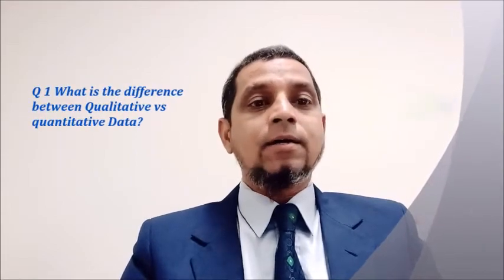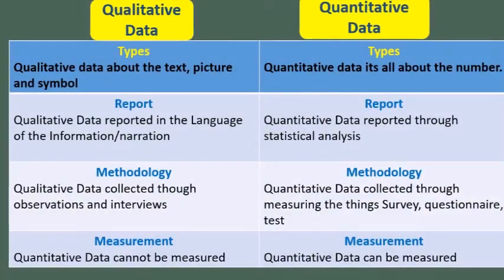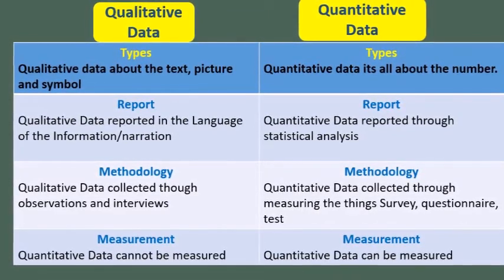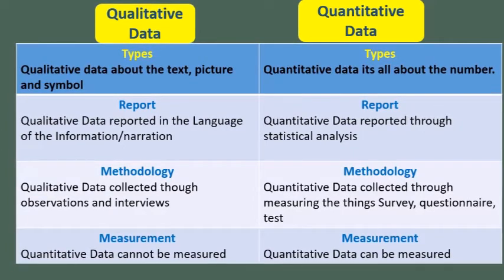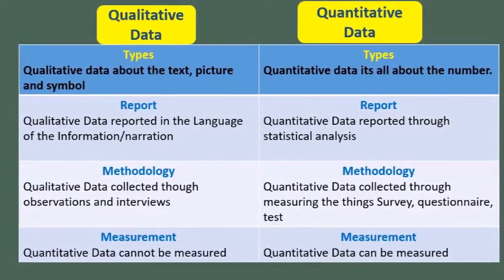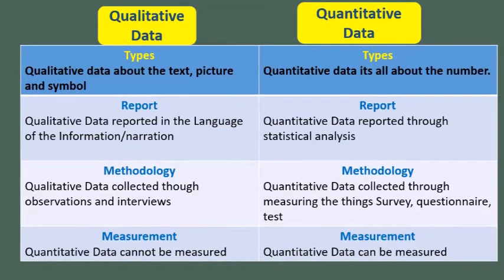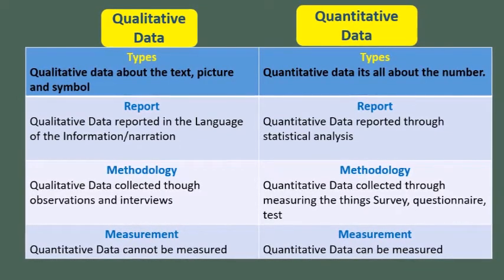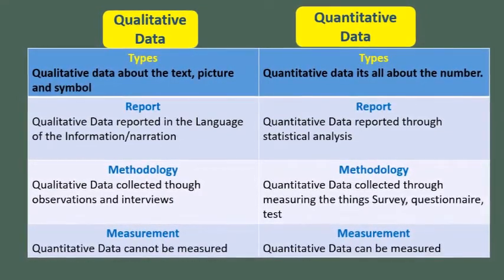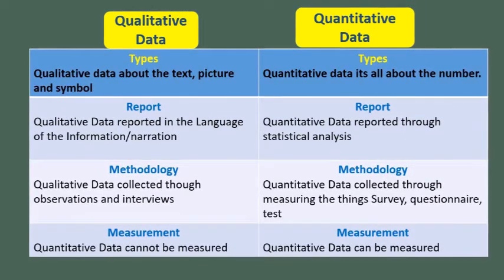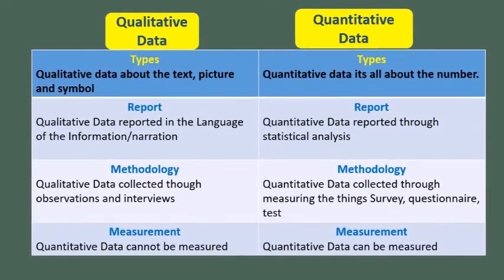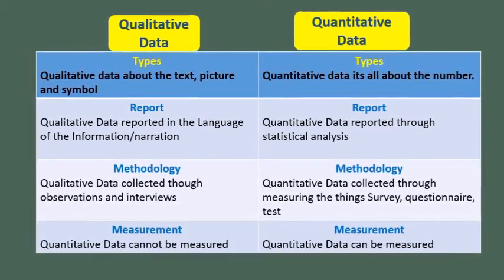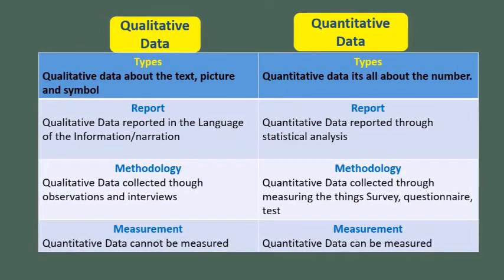Point number one: what is the difference between qualitative and quantitative data? Number one, types — qualitative data is about text, pictures, and samples; quantitative data is all about numbers. Number two, qualitative data is reported in the language of information and narration, while quantitative data is reported through statistical analysis. Number three, qualitative data is collected through observation and interviews; quantitative data is collected through measuring things like surveys, questionnaires, and test measurements.